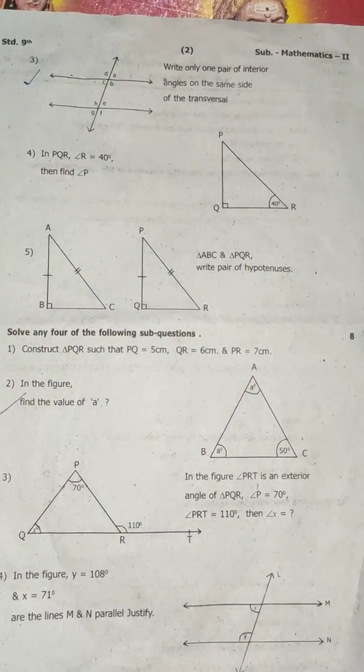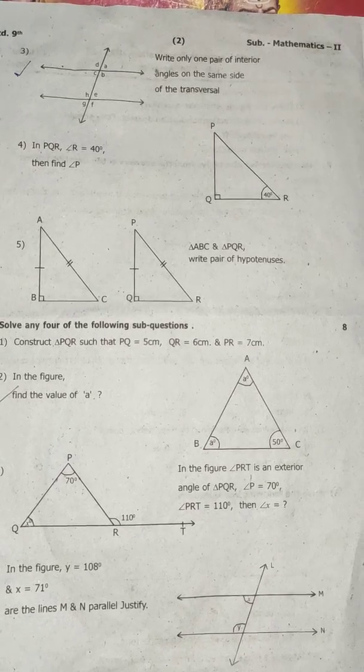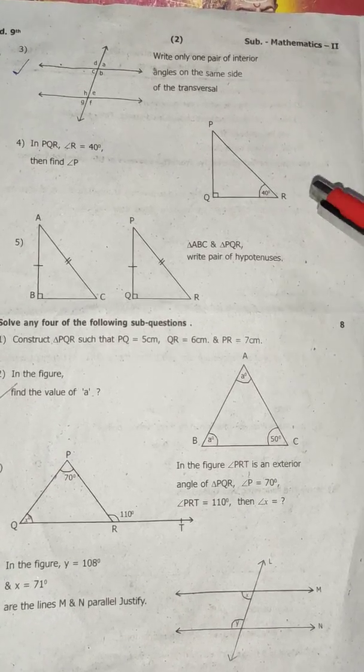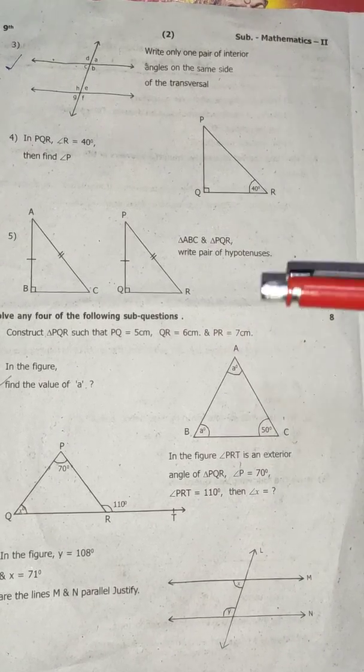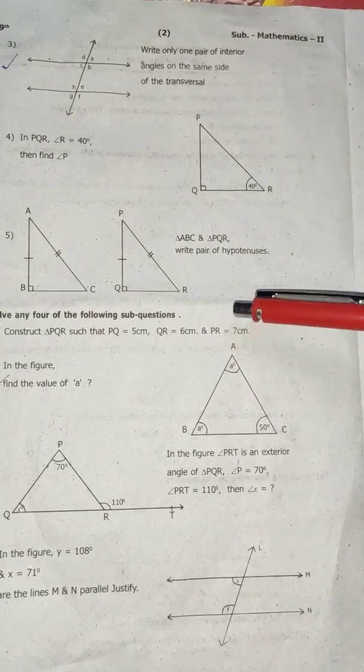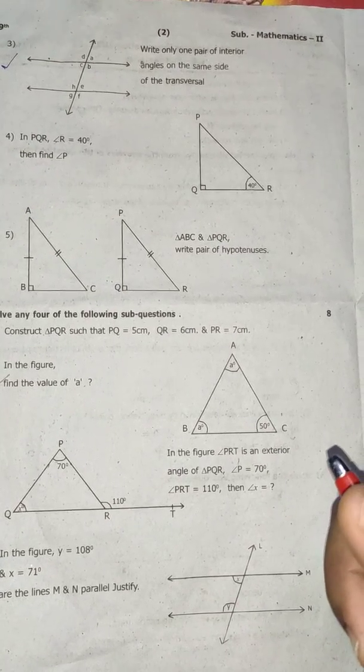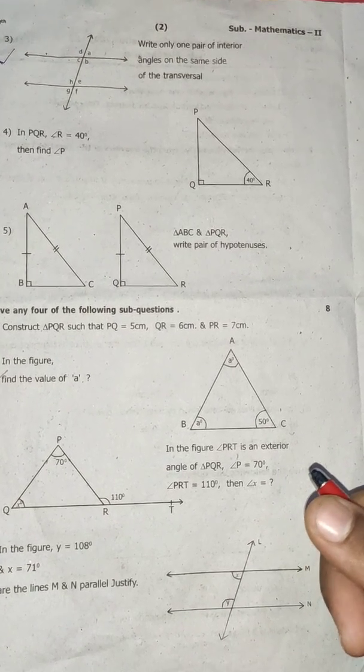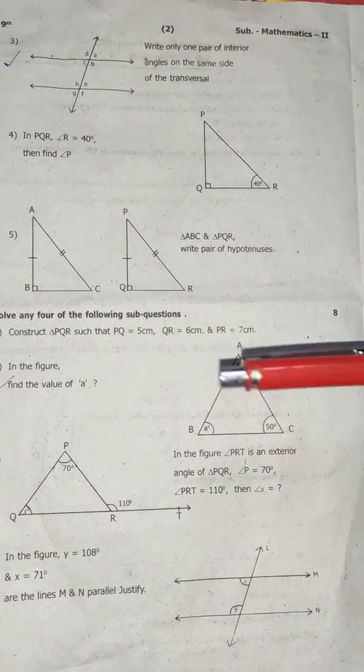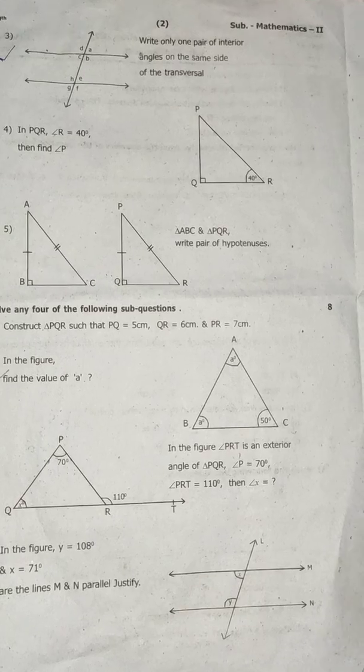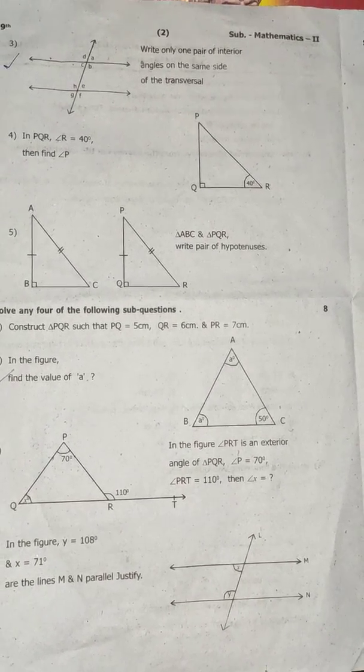Write only one pair of interior angles on the same side of the transversal. In triangle PQR, angle R is equal to 14 degrees, then find angle P. Angle ABC and angle PQR write pair of hypotenuse.